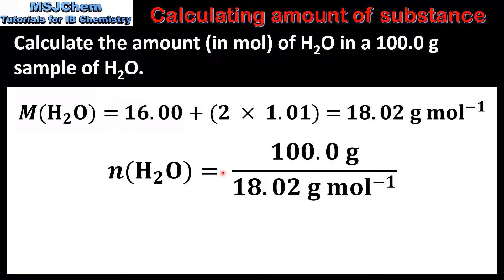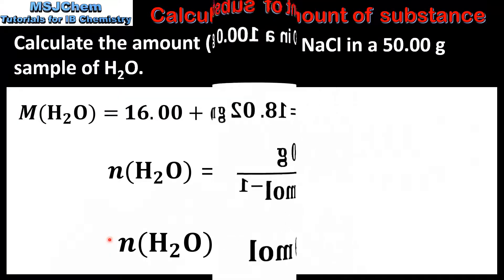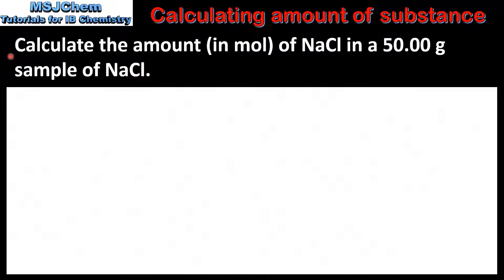Next we divide the mass in grams by the molar mass, which gives us an amount of H₂O of 5.549 moles. In the last example using this equation, we calculate the amount in moles of sodium chloride in a 50 gram sample.